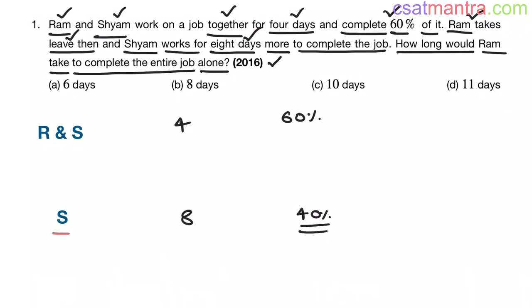Now Shyam is completing this 40% in 8 days. Shyam takes 8 days to complete 40% of the work. In 1 day, how much work is completed? That is 40 by 8. That equals 5%. So 5% of work is completed in 1 day.